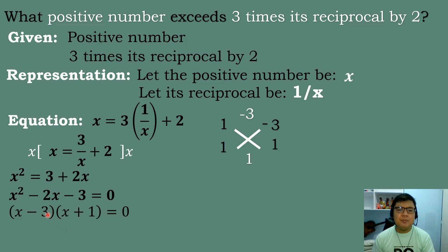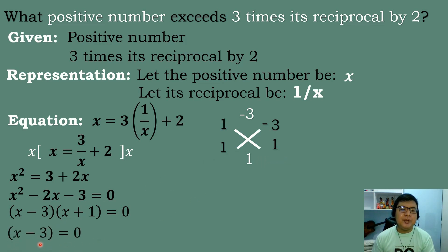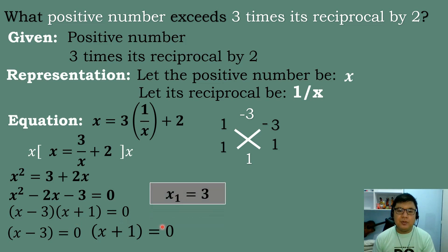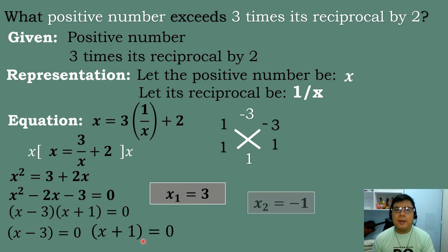So the factors are (x − 3)(x + 1) = 0. Using the zero product property: x minus 3 equals 0 gives x equals positive 3 (first root). And x plus 1 equals 0 gives x equals negative 1 (second root).